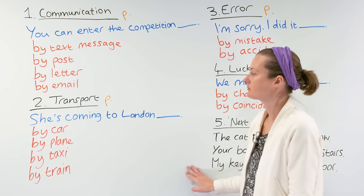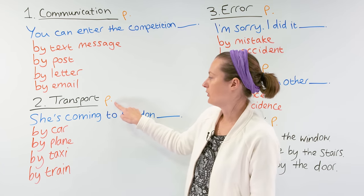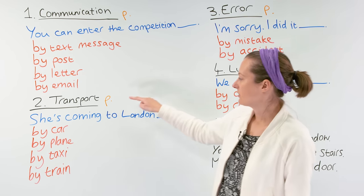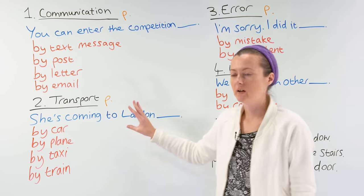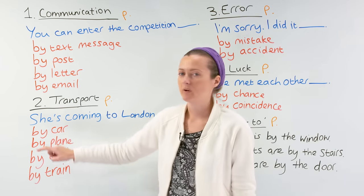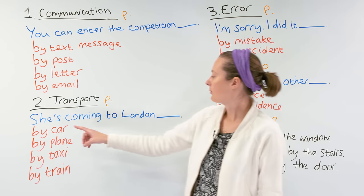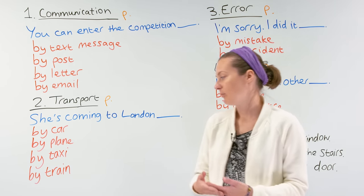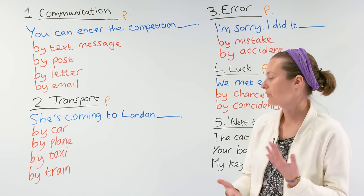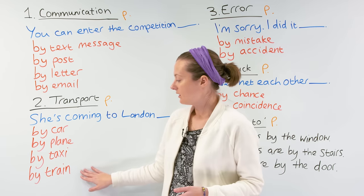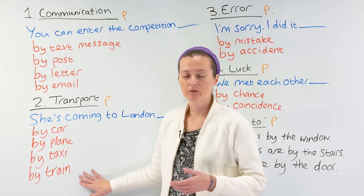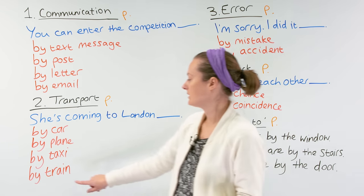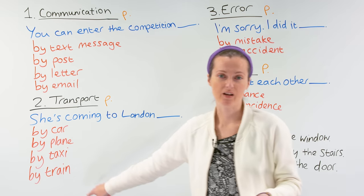Moving on to transport now. 'P' stands for preposition — this shows us that 'by' is being used as a preposition. She's coming to London by car, by plane, by taxi, or by train. When we're talking about transport — the mode of transport, how we go somewhere — we use 'by' as the preposition.